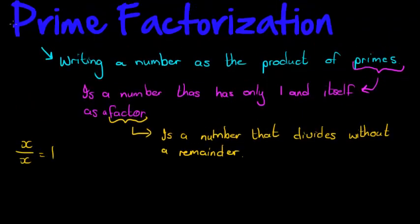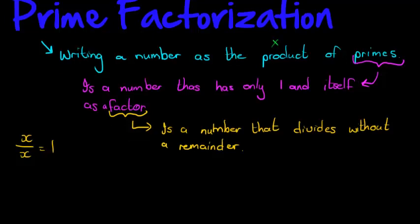Writing something as the product — remember, product is a different word for multiplying — means writing a number as the product of primes. Let's go through the numbers. 1 is not a prime number. 1 is called the unit number. It's not prime and it's also not the opposite of prime. The other numbers are called composite numbers.